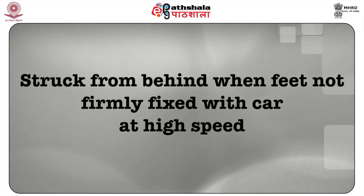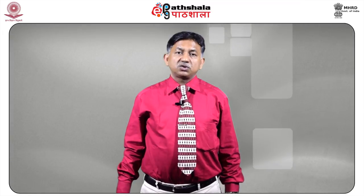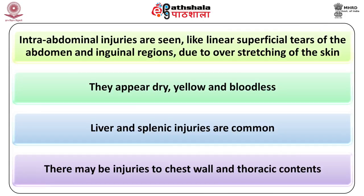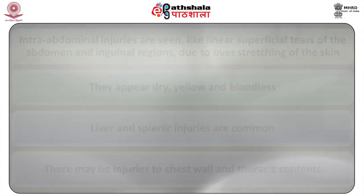When the pedestrian is struck from behind with feet not firmly fixed — when the victim is walking and one leg is lifted — the fracture is often transverse. When the pedestrian is struck from the front, injuries are virtually the same except they are more on the frontal aspect. Intra-abdominal injuries include linear superficial tears of the abdomen and inguinal regions due to over-stretching of the skin, appearing dry, yellow, and bloodless. Liver and spleen injuries are common. Direct impact to the thorax may cause rupture of the aorta below the arch at the level of the ligamentum arteriosum due to sudden increase in intravascular pressure. The heart may show bruising, laceration, and rupture. When struck on one side, injuries are predominantly on that particular side, while the opposite side receives injuries from falling on the road.